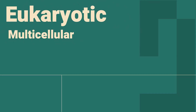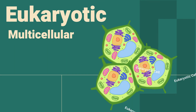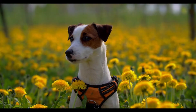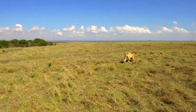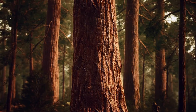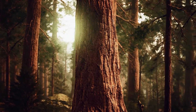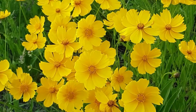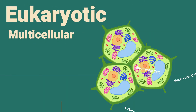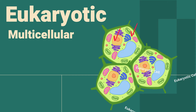Multicellular organisms contain two or more cells. All multicellular organisms like this dog, or lion, or tree, or this flower are made up of eukaryotic cells. Remember, eukaryotic cells do contain a nucleus and membrane-bound organelles.